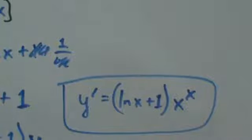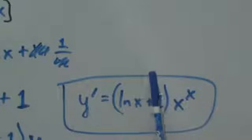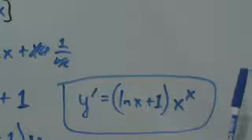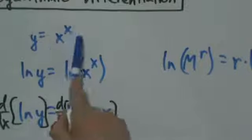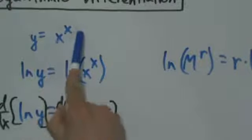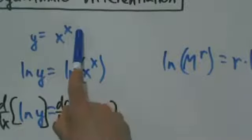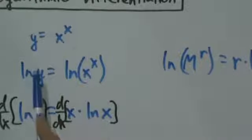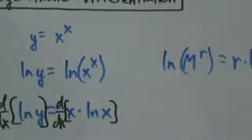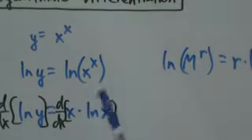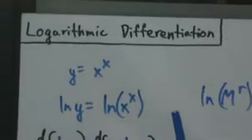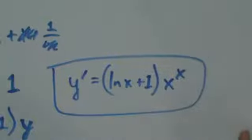When do we use logarithmic differentiation? When you have a function of x raised to another function of x. Here it was x to the x — the same function in both base and exponent. But it could be x raised to sine of x, or sine of x raised to x — those are the next two examples. The point is: if you have a function of x raised to a function of x, you need logarithmic differentiation. That's how to do it and when to use it, and here's our answer for this example.